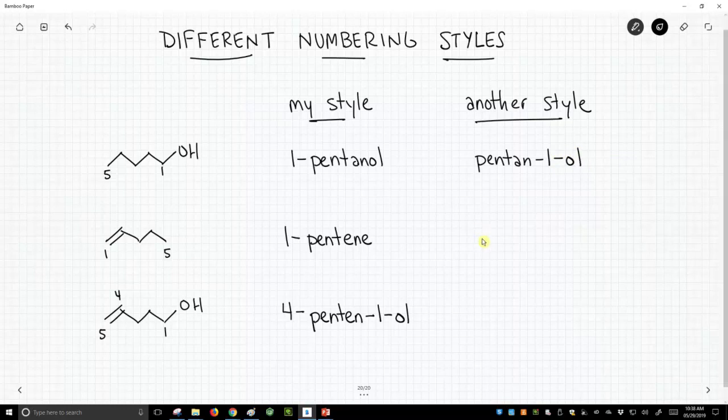You do this with alkenes as well. Instead of saying 1-pentene, you'd say pent-1-ene. And again, to get the number as close to the functional group as possible.